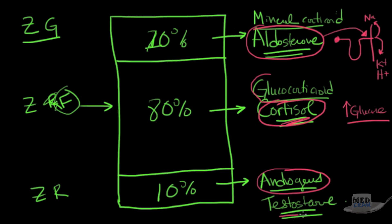Androgens are responsible for male secondary characteristics and also for sex drive in women — in fact, the adrenal cortex is women's only source of androgens. Because these are steroid hormones, aldosterone, for example, is secreted from the zona glomerulosa, travels to distal convoluted tubule cells, enters their nuclei, and instructs them to make sodium-potassium pumps that get exported to the cell surface.